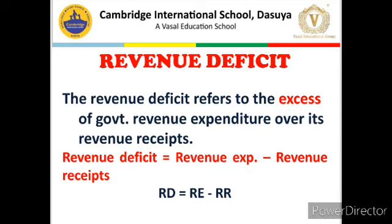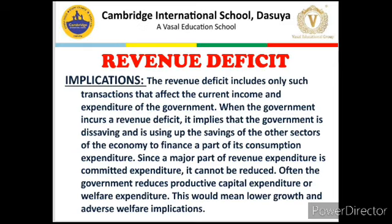For example, Revenue Expenditure includes salaries of Government employees, pensions, money spent on Ministers, and foreign tours of Ministers and other Government dignitaries. If Revenue Deficit exists, it indicates that the management of Government is not correct — collecting less tax while spending more on its upkeep. A Revenue Deficit implies a situation of dis-savings for the Government.